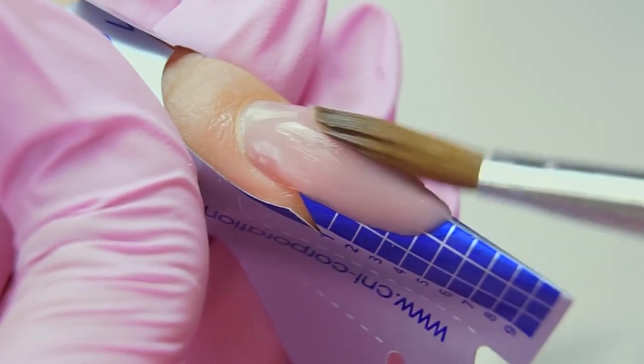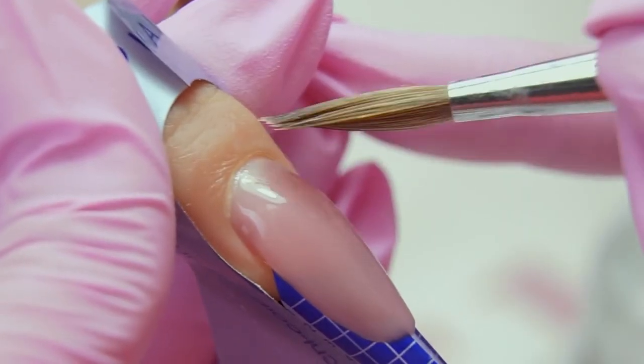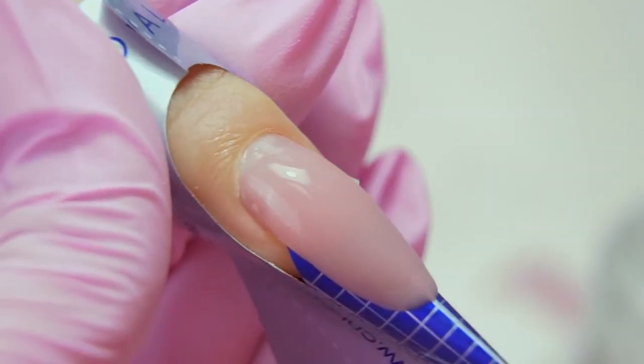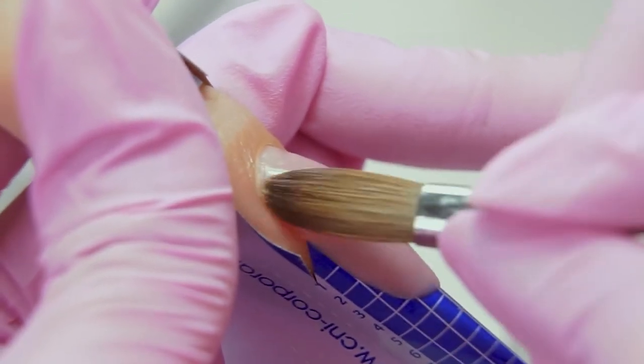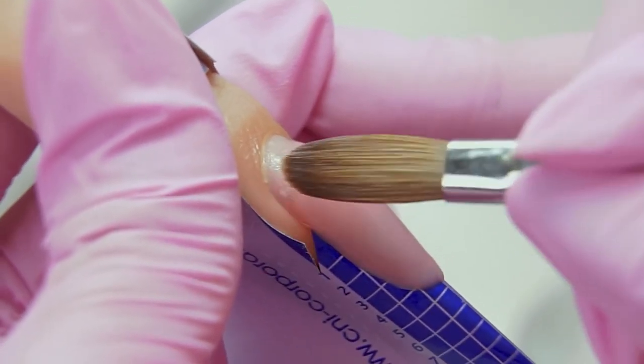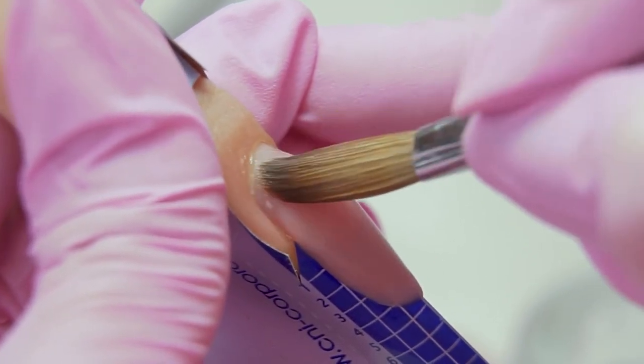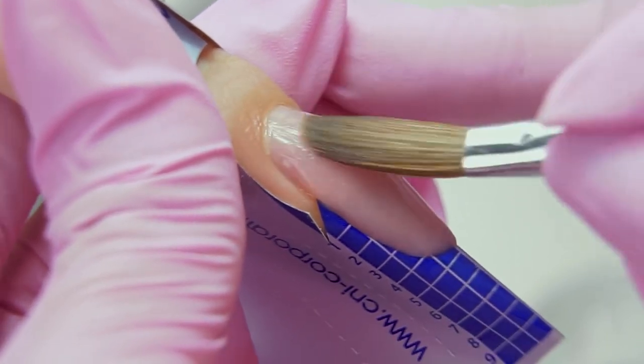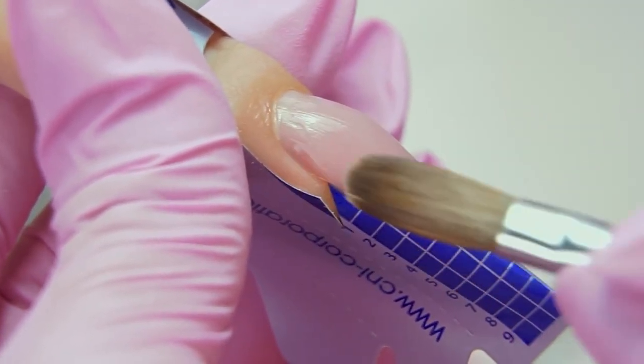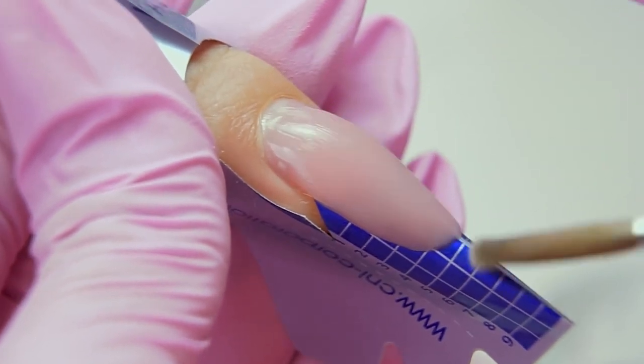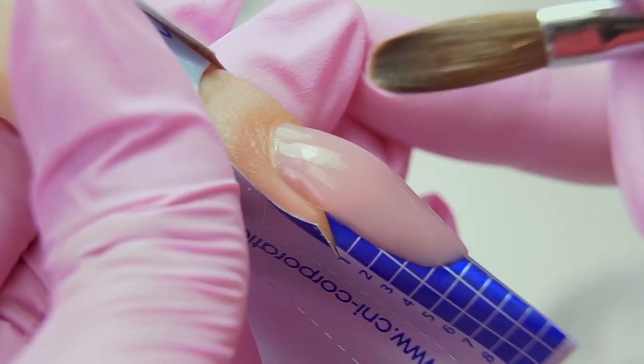This transparent pink gel allowed me to form the highest point, the apex, and a smooth transition near the cuticle. A client may wear such nails for a long time, for about a month, and there won't be any strong transition near the cuticle. Of course, I could have formed the architecture with a camouflage material at once, but I wanted to show you this exact method and a smooth transition from the cuticle to the gel.